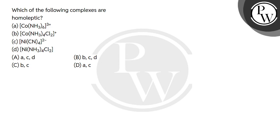Homoleptic complexes have the same type of ligands. A is a homoleptic complex, B is not a homoleptic complex, C is a homoleptic complex, and D is not a homoleptic complex. So the correct option will be A and C.